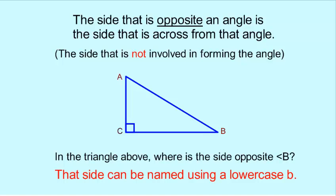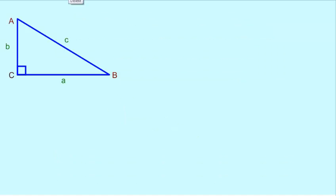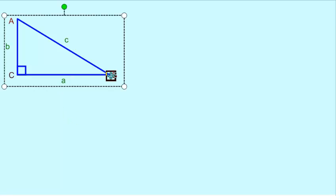This opposite side, side AC, could also be named using just a lowercase b because side B is opposite angle B. So here we see that same triangle ABC, except this time we've drawn in the lowercase letters that represent the side names of each side. So opposite angle A is side A. Opposite angle B is side B.